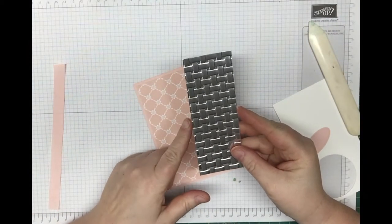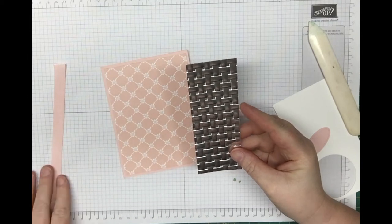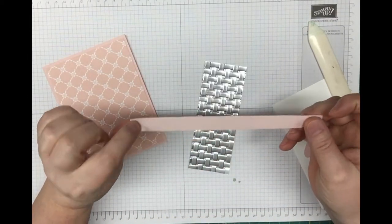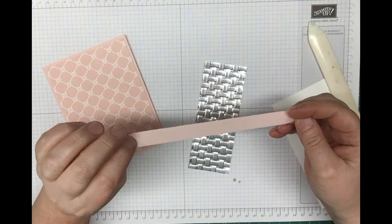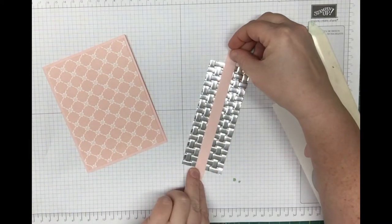Now we're going to take our basket weave strip of paper. We're going to take a piece of powder pink finely woven ribbon, and it's going to go right over the top of this.